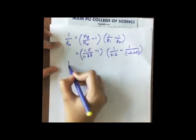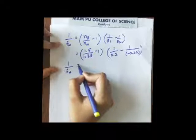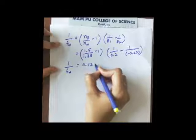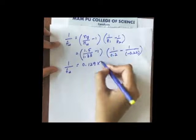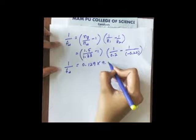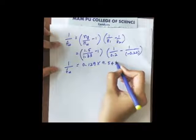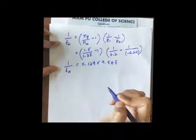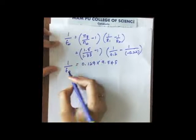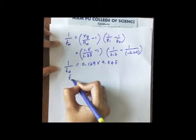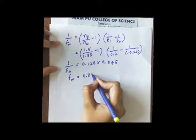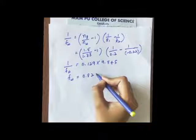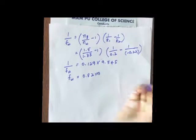After simplifying, the first bracket gives 0.129 and the second bracket gives 9.545. Multiplying these: 1/F_water = 0.129 × 9.545. Taking the reciprocal gives F_water = 0.82 meter.